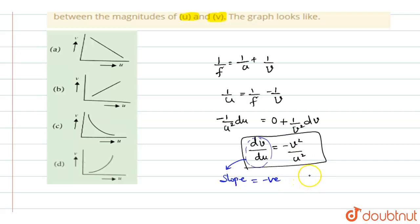So if the slope is negative, either curve c should be correct or curve a should be correct, because it should be decreasing. When you see here, b and d, the graphs are increasing. But since you have a negative slope here, it means the graph should be decreasing. So either a or c should be correct.